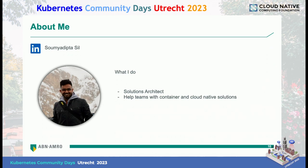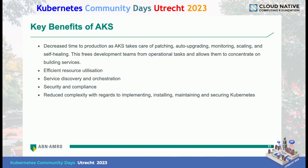I am a solution architect at ABN Amro — that's my official title — but what I am is a developer and a Kubernetes enthusiast like most of you here. I live in Utrecht, which is why it was easiest for me to come and give this presentation since my colleague dropped out. Going into the benefits of AKS: I'm going to skip the benefits of Kubernetes altogether because that's the whole reason why everyone is here. But why Azure Kubernetes Service specifically?